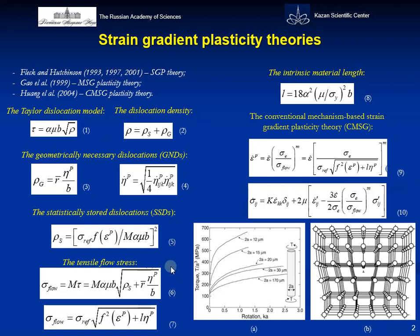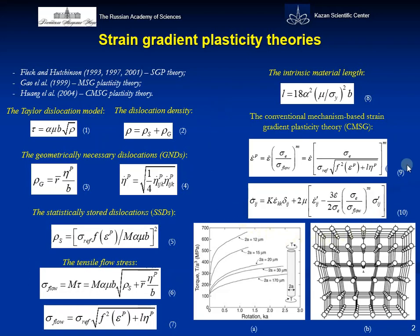The basic constitutive equations of CMSDP include the plastic strength gradient and the material properties in the form of the yield stress, the strength-hardening exponent, and intrinsic material length. The material constitutive equation for CMSDP is implemented in a finite element code.